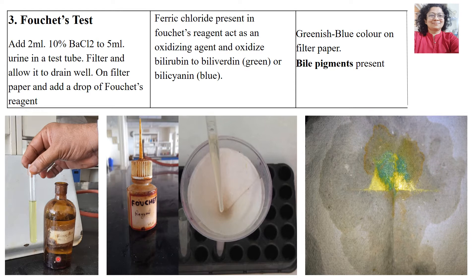We take 5 ml of urine, add 2 ml of BaCl₂, and filter it through filter paper into a conical flask. Once the filtrate has drained, on whatever remains on the filter paper we add 1 or 2 drops of Fouchet's reagent. If bile pigments are present, they will react with ferric chloride to give a bluish green colour on the filter paper.